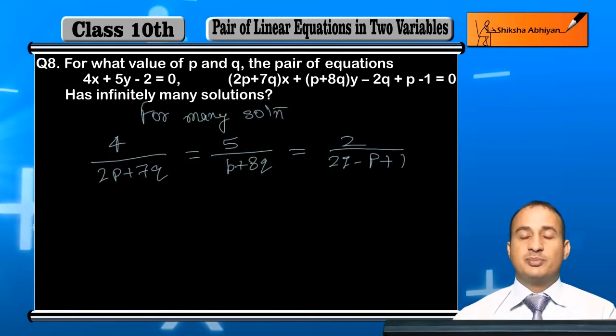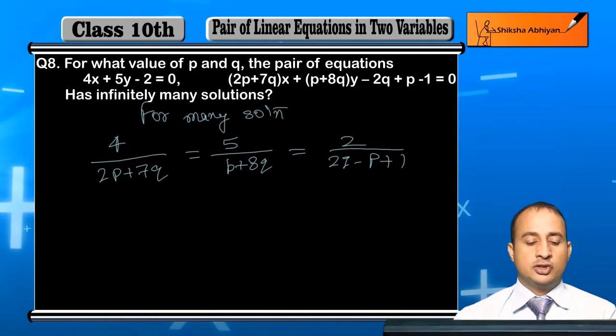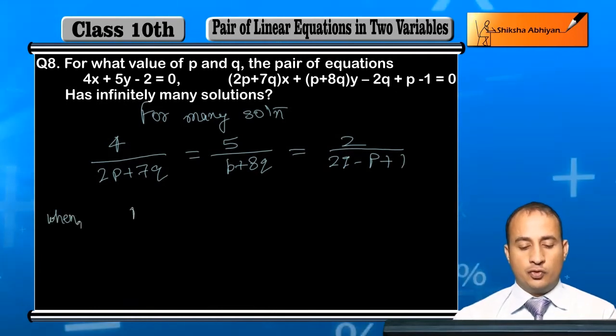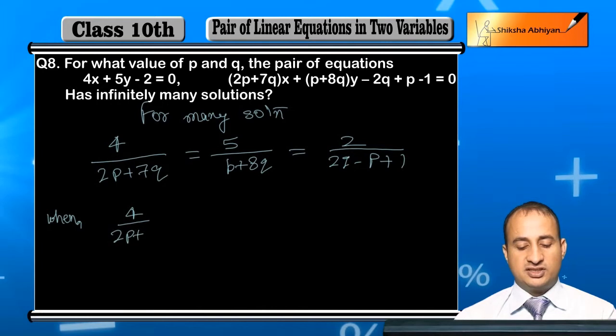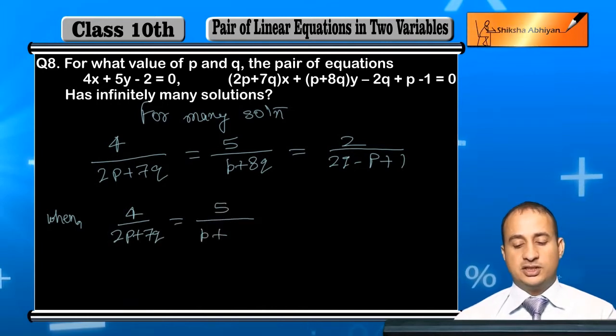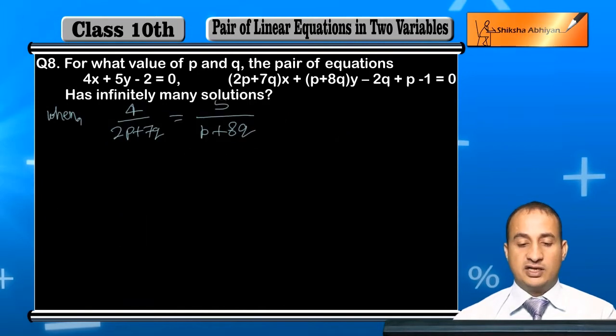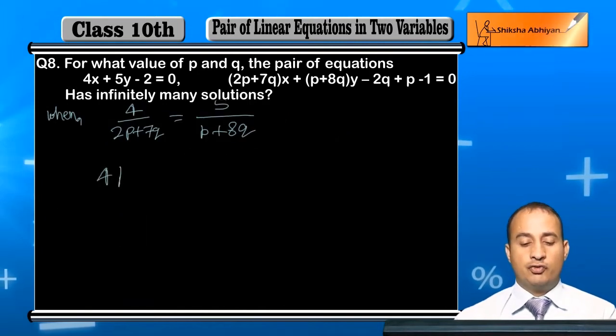Now student, if we want p and q value, we need fractions equal to one another. So, 4 upon 2p plus 7q equal to 5 upon p plus 8q. I will cross multiply.